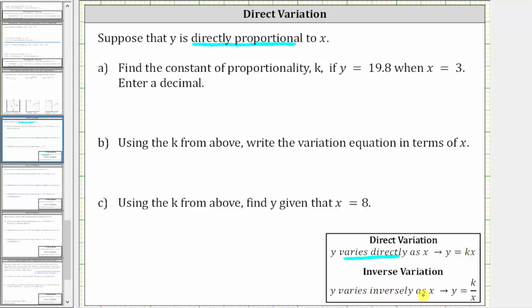If we are told that y varies inversely as x, we use the equation y equals k divided by x. So again, because we have direct variation, we know we are using the equation y equals k times x.